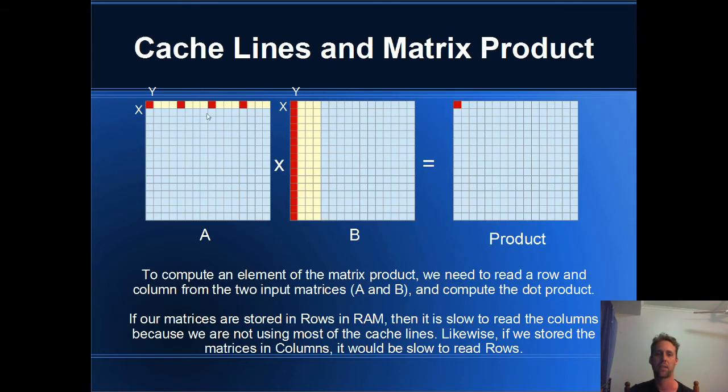But how did it help us with our matrix product? Well, this is what was happening in the first example, the slower example of our matrix product. To compute this value in the matrix product, what we need to do is get the dot product of the row from matrix A and the column from matrix B. And if we store the data in such a way that the row elements are all beside each other, it's fine to read the row.